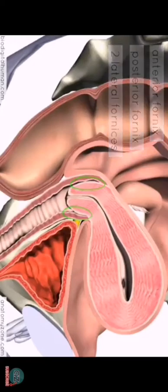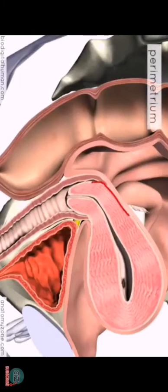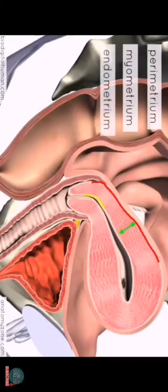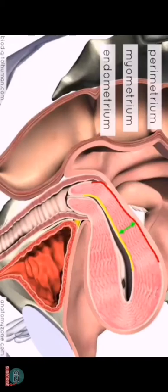In terms of the layers of the uterus, you've got an outer connective tissue layer called the perimetrium. Then, as you can see from this cross-section, you've got a thick middle layer of smooth muscle — the myometrium — which is important during labor for contraction. And then lining the cavity of the uterus, you've got the endometrium, which is the internal mucosal layer. The endometrium is interesting because it thickens during the menstrual cycle and disintegrates at the onset of menstruation — it's under hormonal influence and varies in thickness throughout the menstrual cycle.